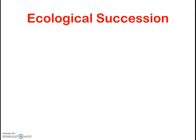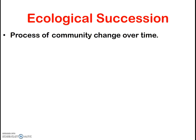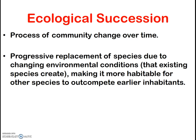Here are a couple of definitions. The process of community change over time, or the progressive replacement of species due to changing environmental conditions that existing species create, making it more habitable for other species to out-compete the earlier inhabitants. The first definition is short and sweet, but the second helps us understand how the changes occur.